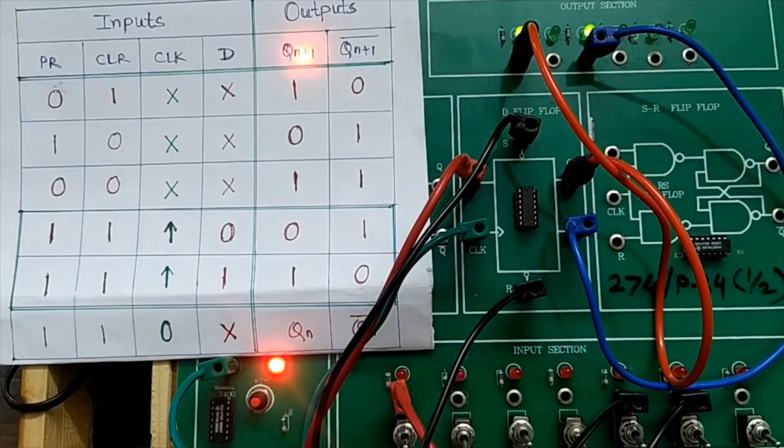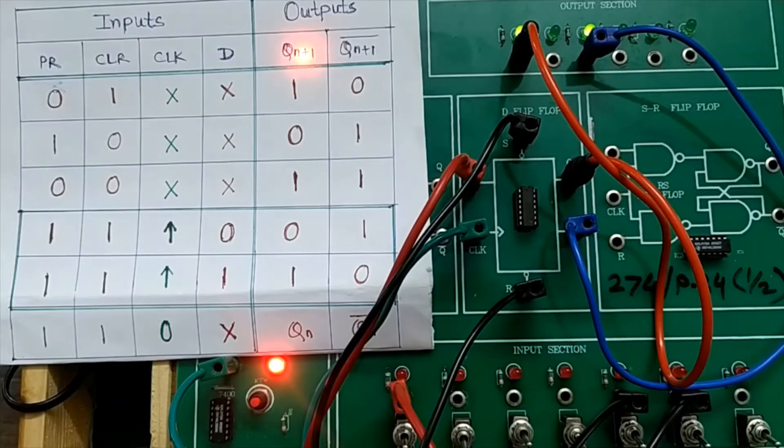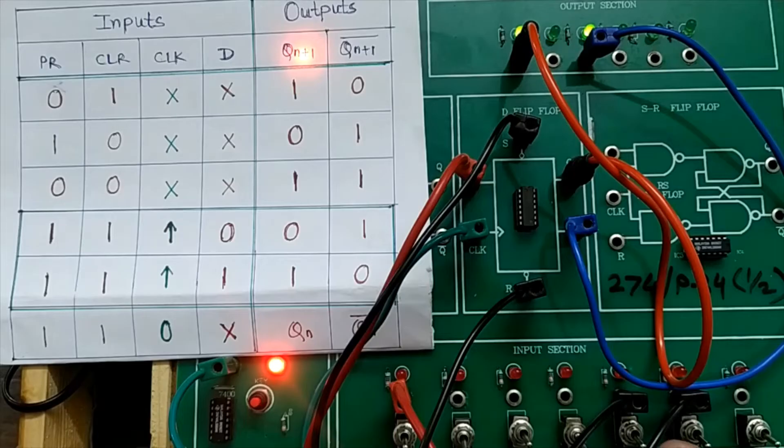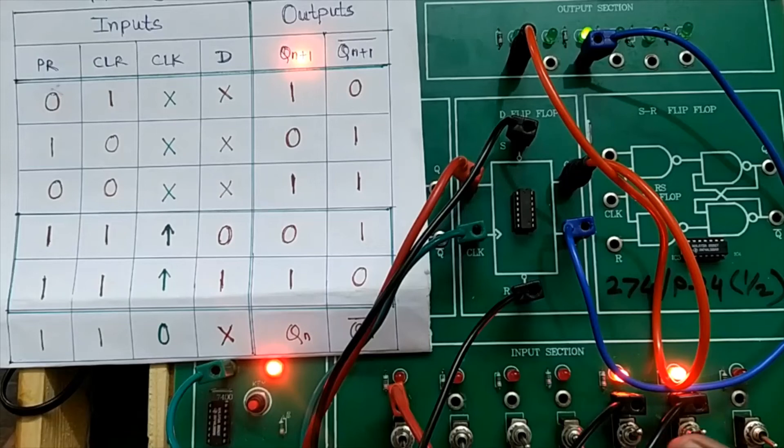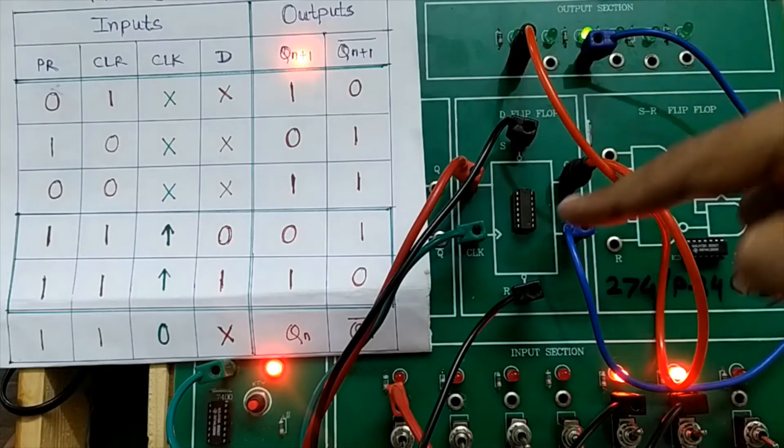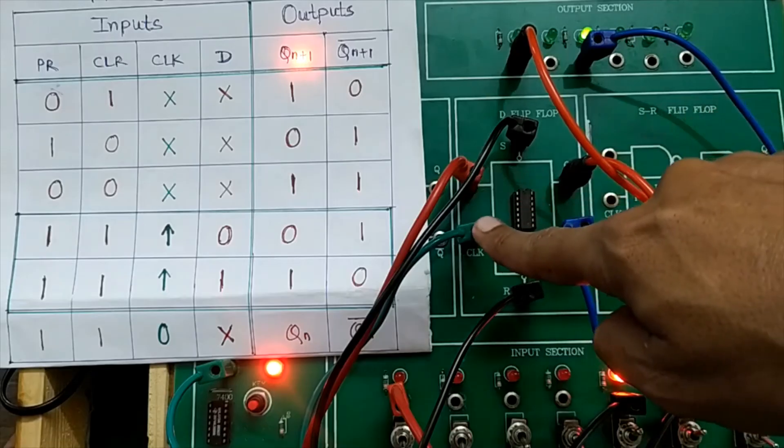The first three rows show how preset and clear affect the output of the D flip-flop. In the next two rows we want to have the output change according to the applied input with the help of a clock. For that purpose I should make preset one and clear also one. In other words, I neither want to preset nor clear the flip-flop. I want the output to change according to the applied D input with the help of a clock.